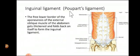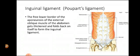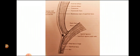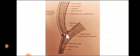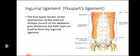The inguinal ligament, which is also called Poupart's ligament — how is it formed? It is formed by the free lower border of the aponeurosis of the external oblique muscle. The lower free border of this aponeurosis gets thickened and folds back on itself to form the inguinal ligament. So it extends from the anterior superior iliac spine to the pubic tubercle. The free lower border of the aponeurosis thickens, folds on itself, and forms the inguinal ligament.